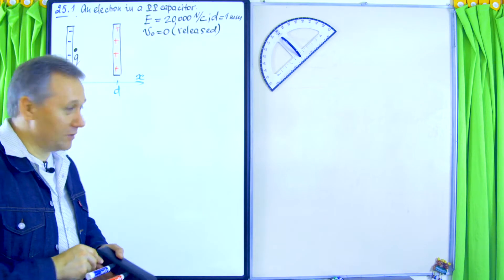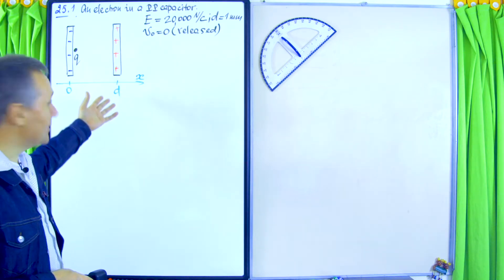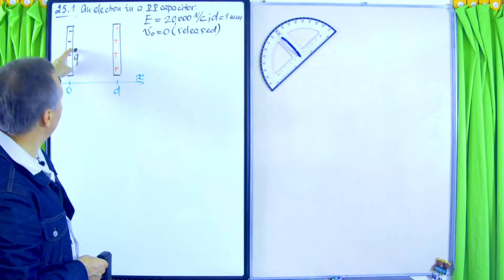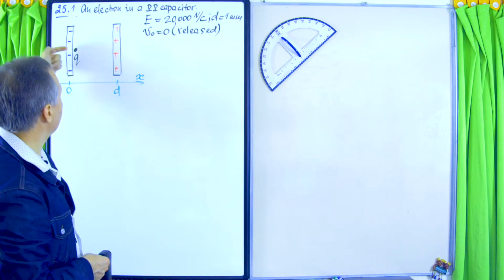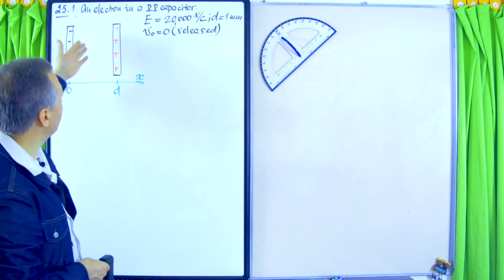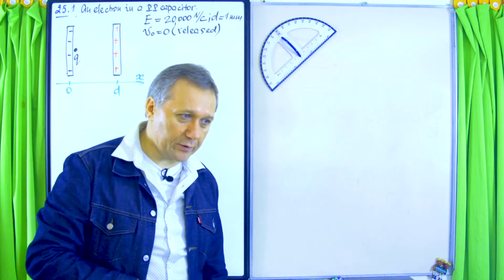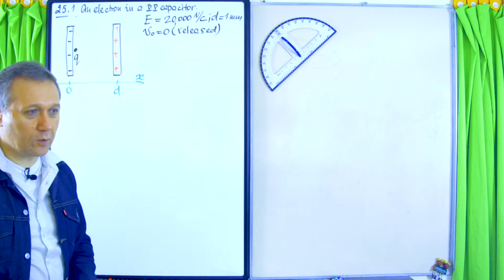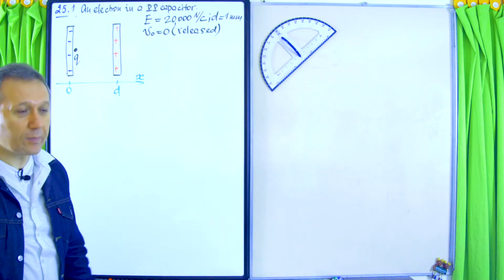So what happens first conceptually with this electron? It is released and of course it is repelled from the negative electrode and attracted by the positive electrode. So it will start accelerating towards the positive electrode, and sooner or later it will reach the positive electrode. We need to find the speed of the electron when it reaches the positive plate.